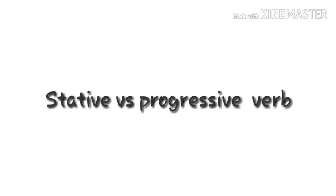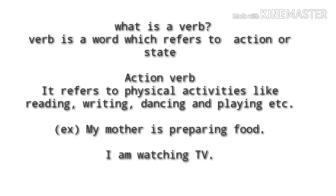Hi there, this is Marshall from Modern Grammar. In this video I would like to teach you state versus progressive verb. First of all, what is a verb? A verb is a word which refers to action or state. What is an action verb? An action verb always refers to physical activities like reading, writing, dancing, and playing.